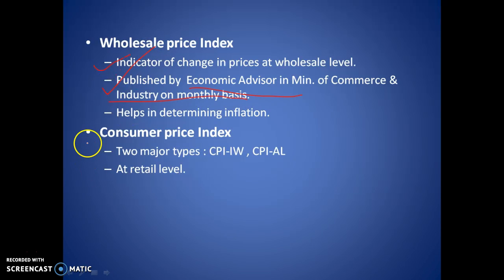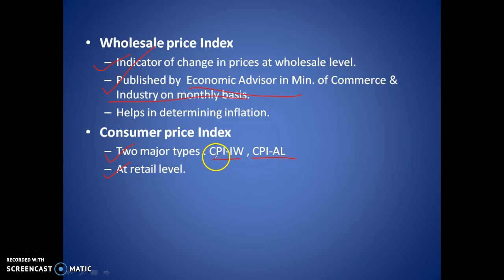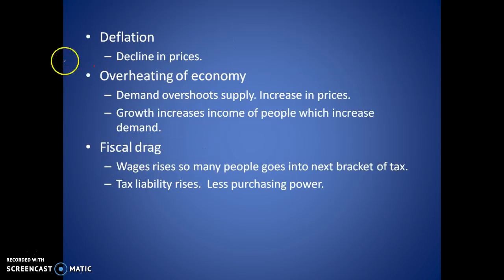Then we have the Consumer Price Index — CPI — which has two major types right now: CPI for Industrial Workers and CPI for Agricultural Laborers. CPI for Industrial Workers helps calculate the Dearness Allowance, which determines salary increases. CPI for Agricultural Laborers shows rural inflation or changes in prices at the retail level.